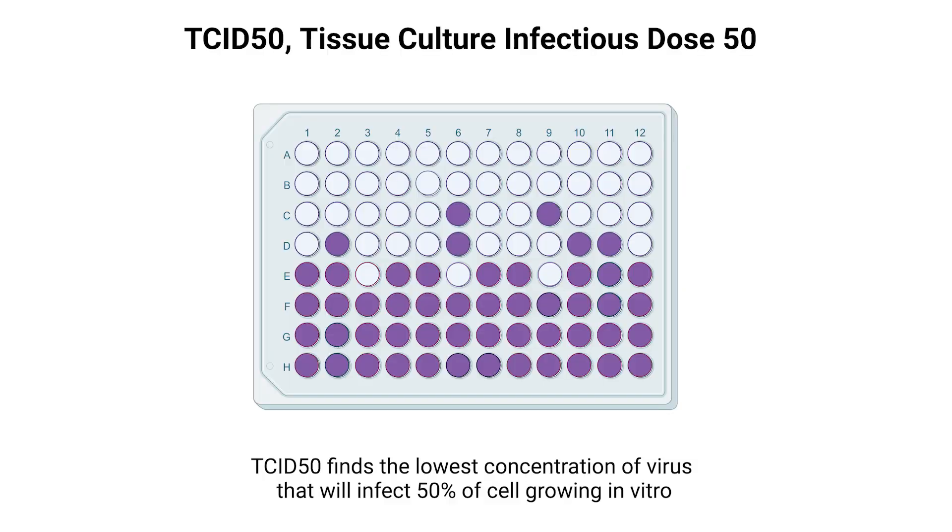First, it's important to understand that the TCID-50 doesn't directly measure the total number of viral particles. As we've discussed in our previous videos, the TCID-50 represents the dilution of a virus that infects 50% of the wells in our assay. This is a measure of viral infectivity rather than a direct count of virus particles.